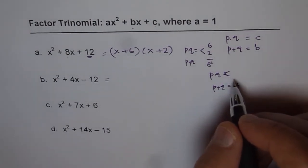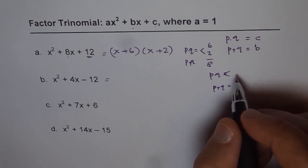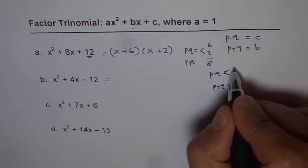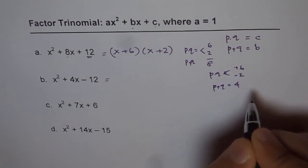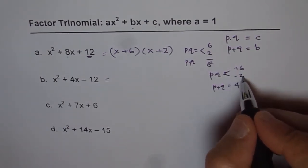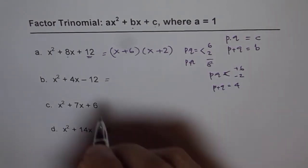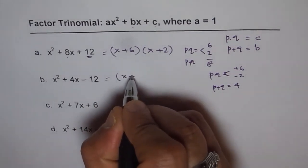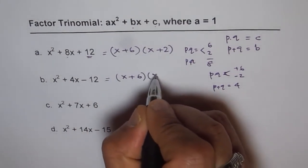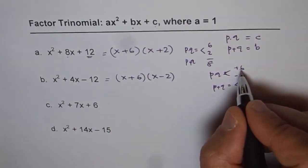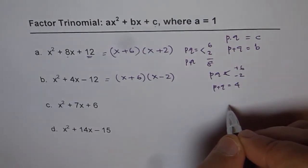So this time still the numbers are 6 and 2 but the bigger number is positive, that is plus 6 and minus 2. When you add plus 6 and minus 2 you get plus 4. So here the answer is (x + 6)(x - 2). These are our two magic numbers.